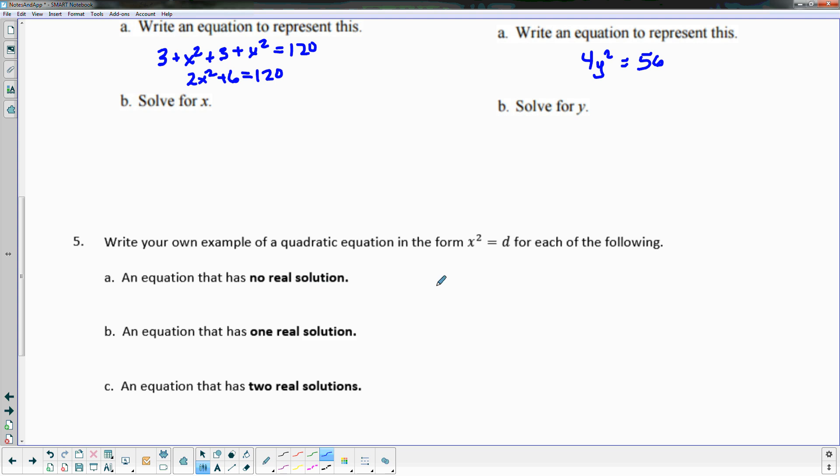What makes something have no solution when I have an equation that says x² equals a number? What makes something have no solution, what makes it have one solution, and what makes it have two solutions?